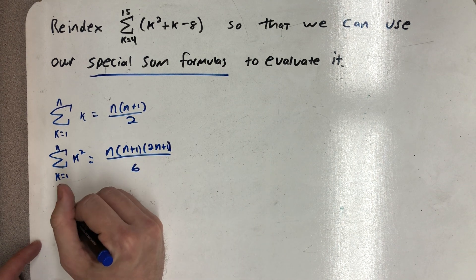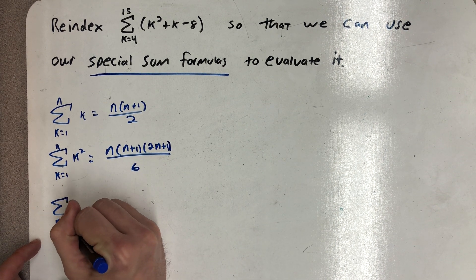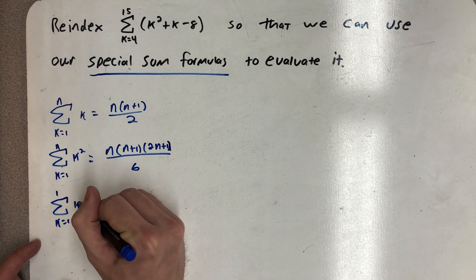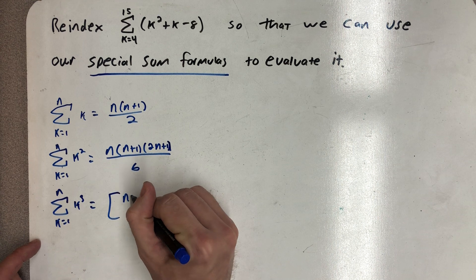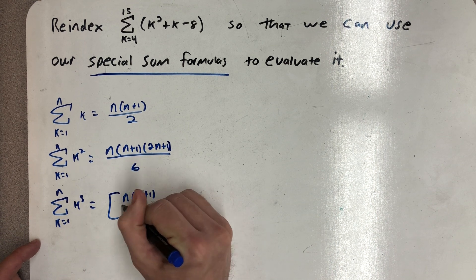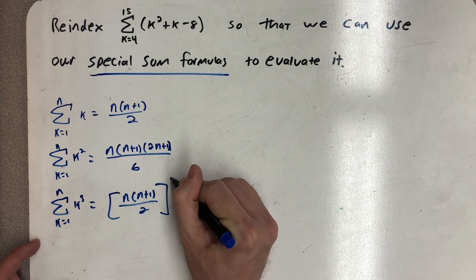And then finally, the sum from 1 to n of the k cubes, so the sum of the first n cubes, is n times n plus 1 all over 2 squared.